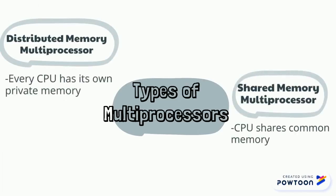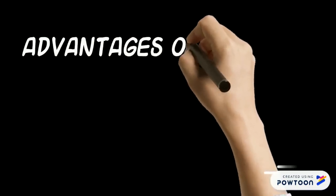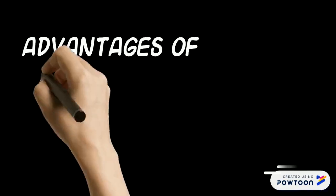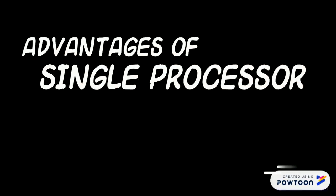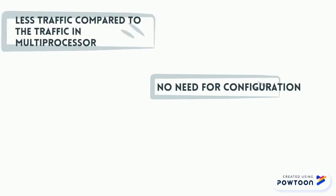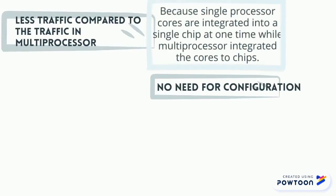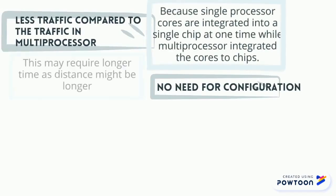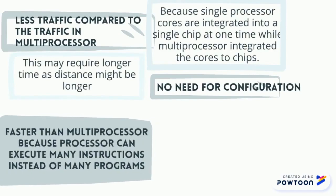There are two types of multi-processors. The first one is shared memory multi-processors. The second one is distributed memory multi-processors. That is all for the introduction. Now let's talk about the advantages of single processors.